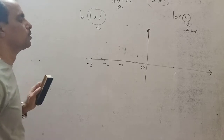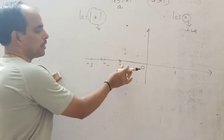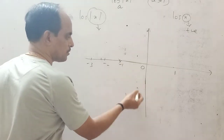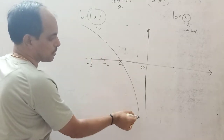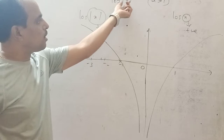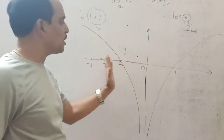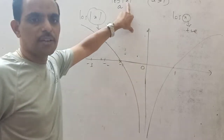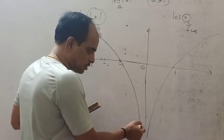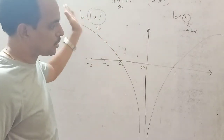For log|x|: at x = -1, log 1 = 0. At x = -1/2, log(1/2) is negative. The graph is symmetric about the y-axis — on both sides the behavior mirrors the log x graph. The graph comes down to negative infinity near x = 0 on both sides and crosses the x-axis at x = ±1.